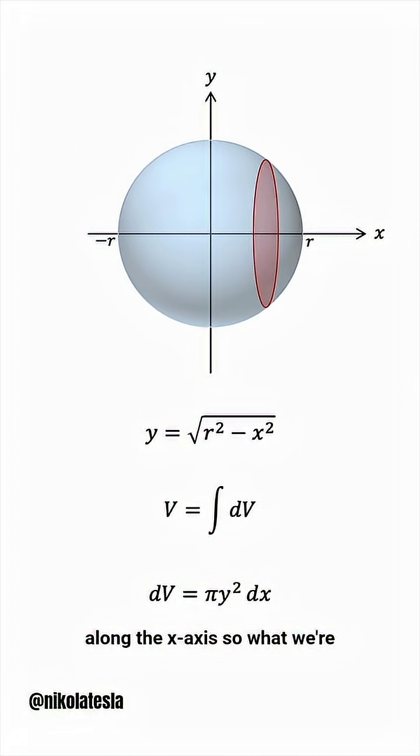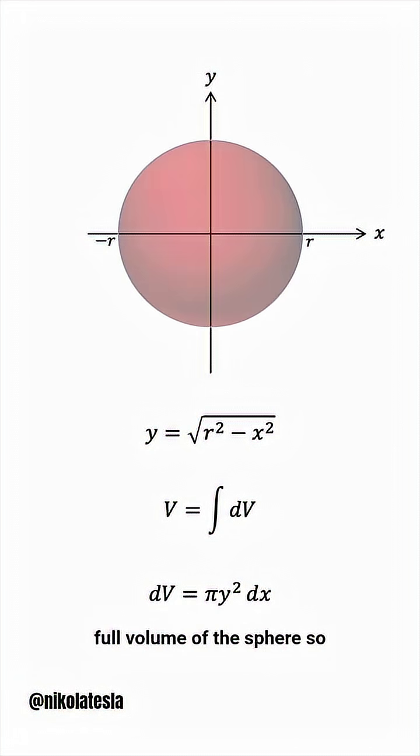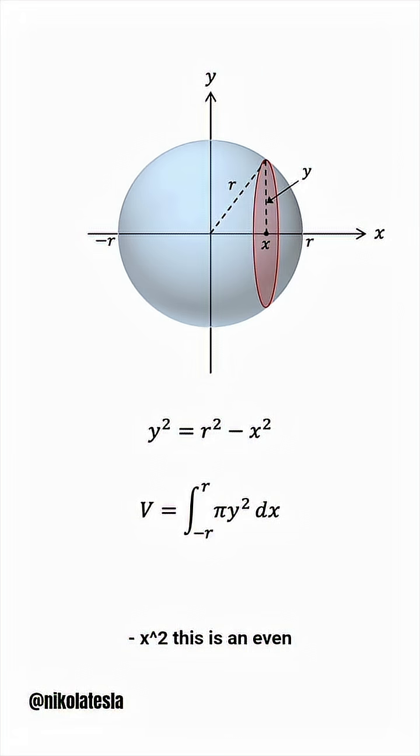So, what we're doing is adding all of the slice volumes, eventually giving us the full volume of the sphere. So, we'll integrate pi y squared dx. The bounds of integration are from negative r to r, and y squared is r squared minus x squared.